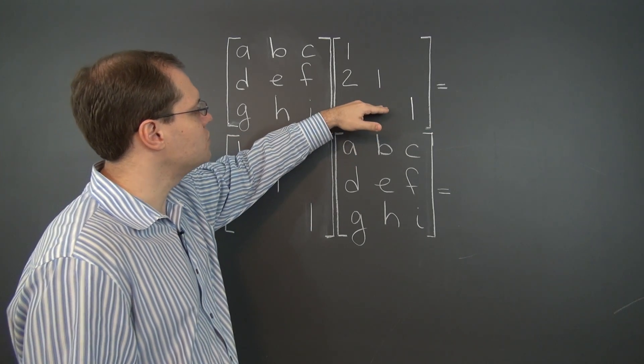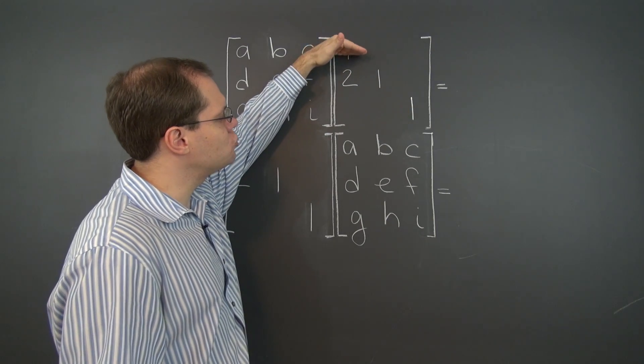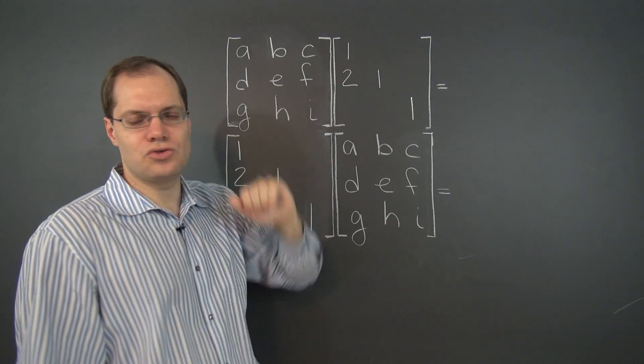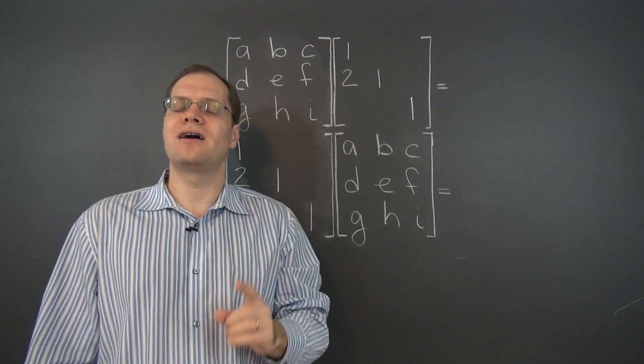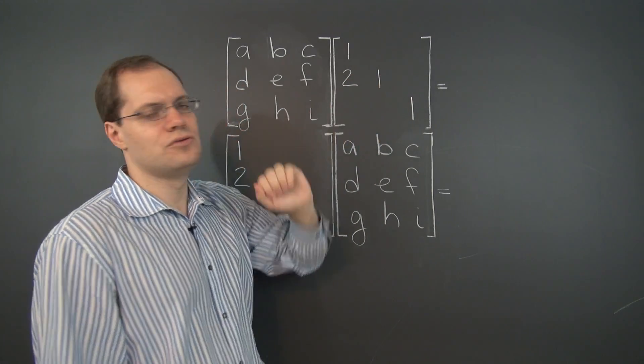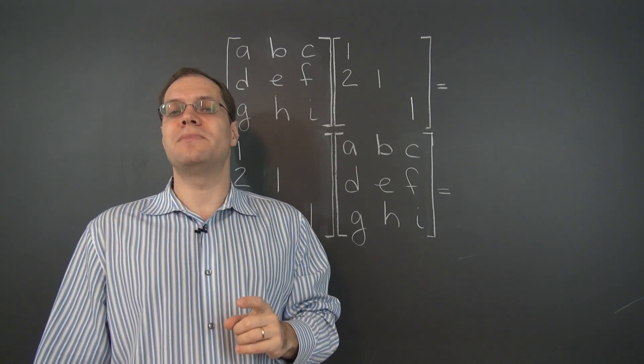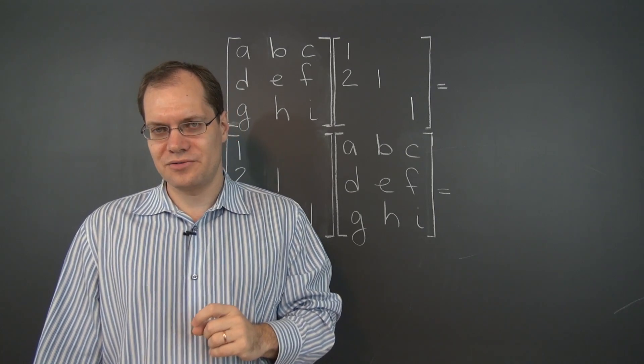Now from the rows' points of view, imagine the identity. This matrix is obtained by adding 2 of row 1 to row 2. And from the columns' point of view, this matrix is obtained from the identity by adding 2 of column 2 to column 1. So keep those in mind when you are interpreting the results.